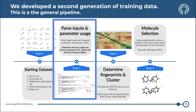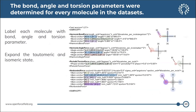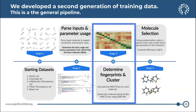Next, we parsed the inputs and determined parameter usage. We took each molecule from the data set, labeled it with the bond, angle, and torsion parameters it used, and expanded the tautomeric and isomeric states. This gave us each molecule utilizing each parameter in each data set, separated so we could proceed to further analysis.